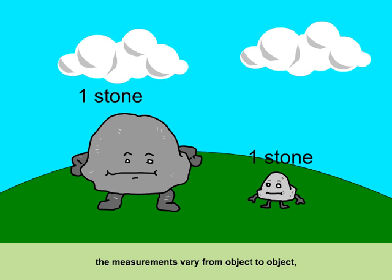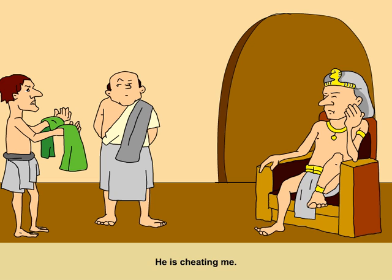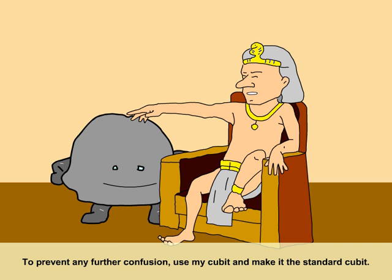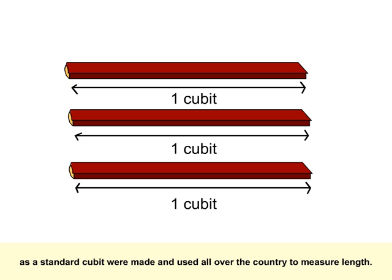However, the measurements varied from object to object and from person to person. He has cheated me! I can't help it if my assistant's cubit is short! To prevent any further confusion, use my cubit and make it the standard cubit. Sticks of the same length as the standard cubit were made and used all over the country to measure length.